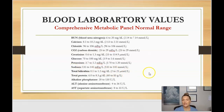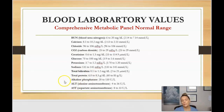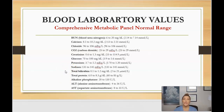But the CMP, or comprehensive metabolic panel, also contains additional values: total bilirubin, total protein, alkaline phosphatase, ALT, and AST. These — the alkaline phosphatase, ALT, AST, and bilirubin — are all indicative of your liver and how well the liver is functioning.